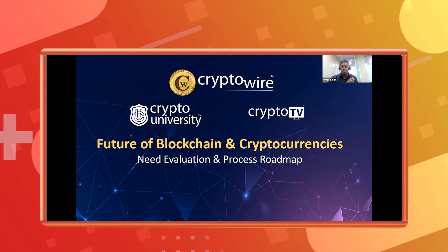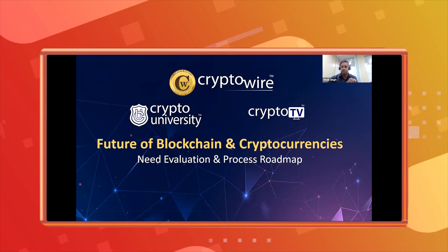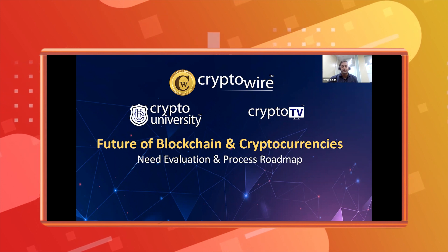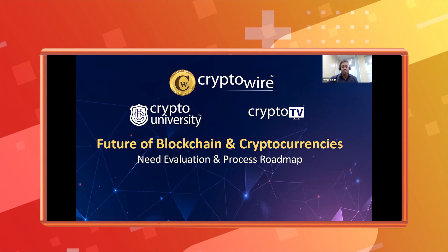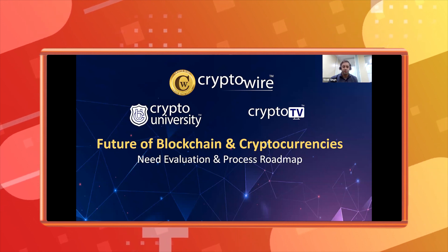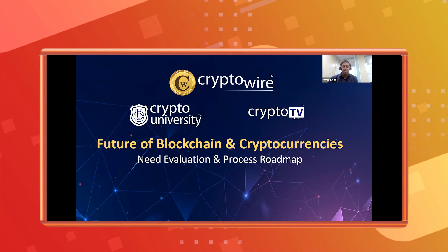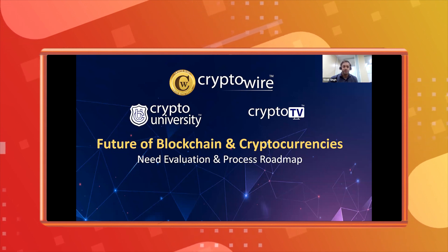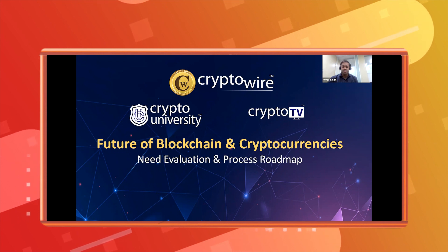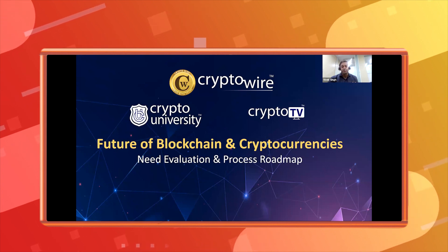Bitcoin was just serving the purpose of cryptocurrency, but we wanted something more advanced where people could write smart contracts. There were challenges with Bitcoin — it followed the UTXO (Unspent Transaction Output) model, and it used a language called Bitcoin Script in which you couldn't write advanced smart contracts or develop applications on top of the Bitcoin network.